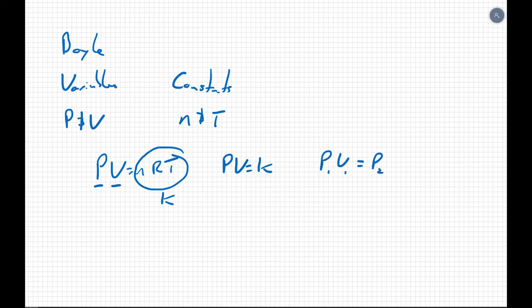P1V1 equals P2V2. Alright. Let's look at Charles. Charles studied volume and temperature. And he kept pressure and amount constant.